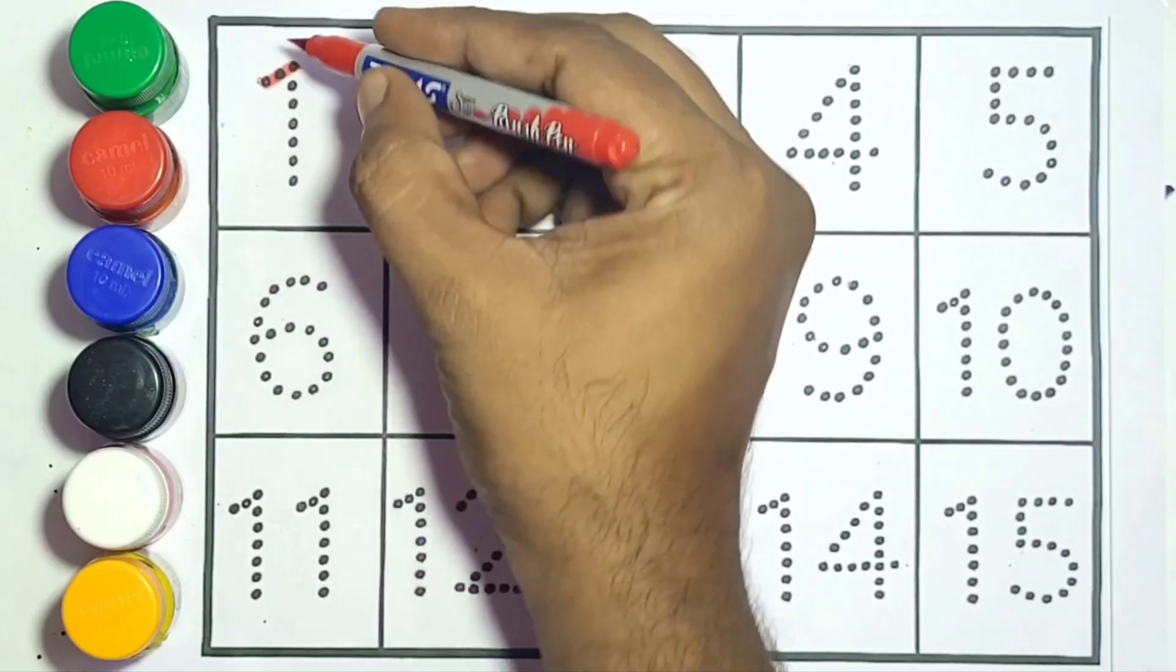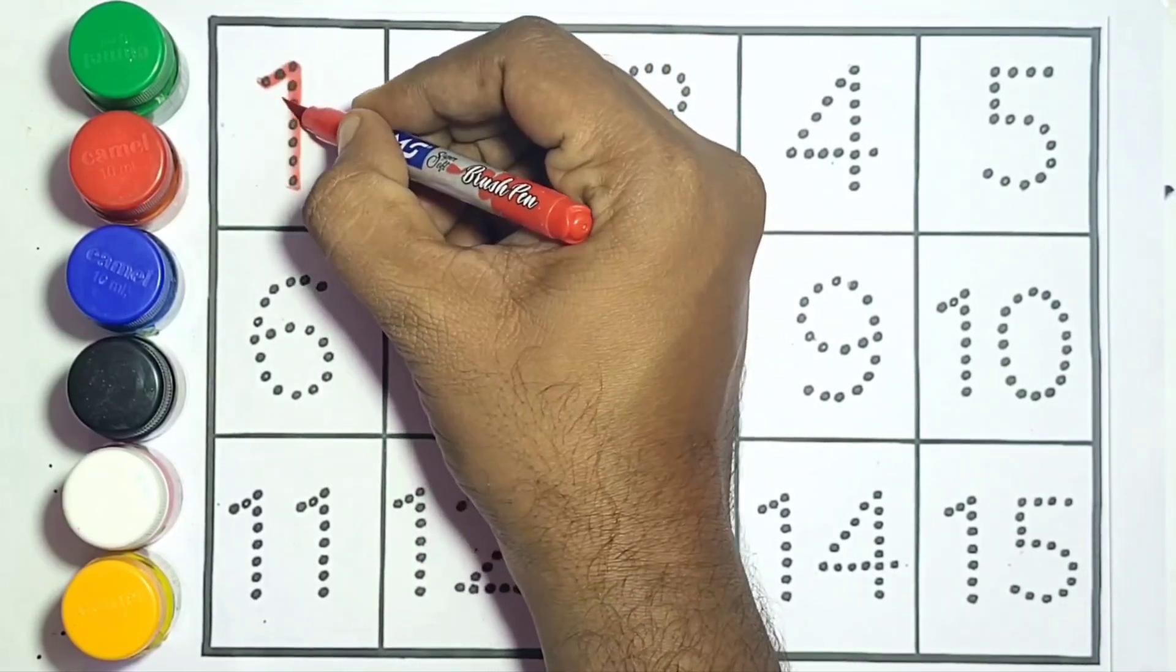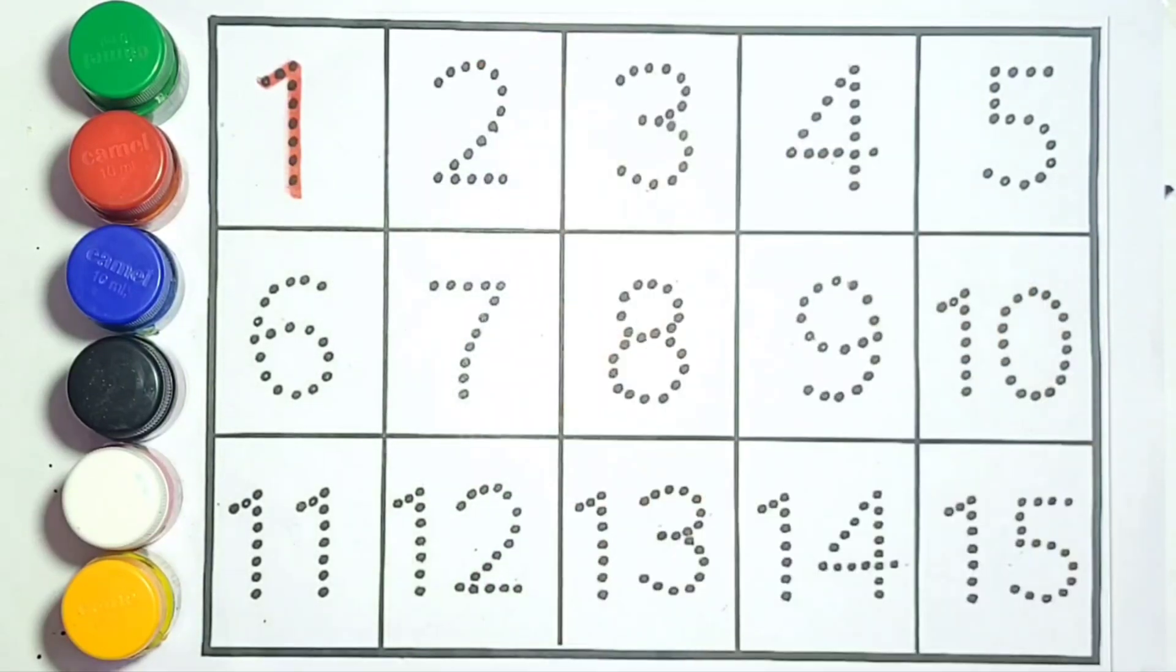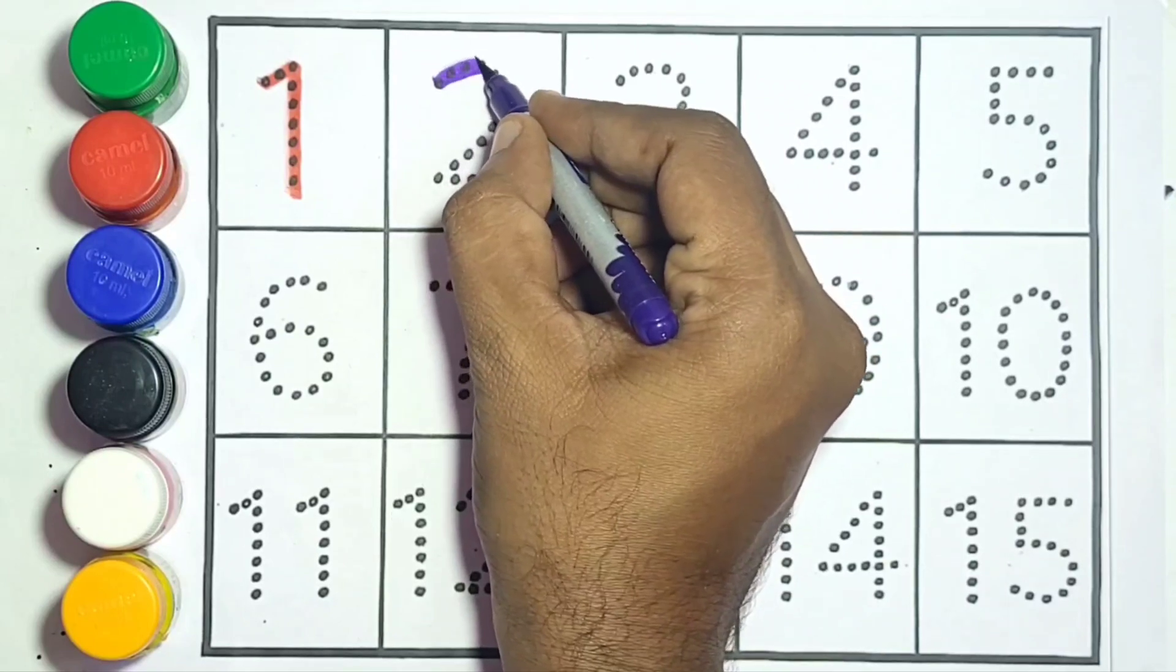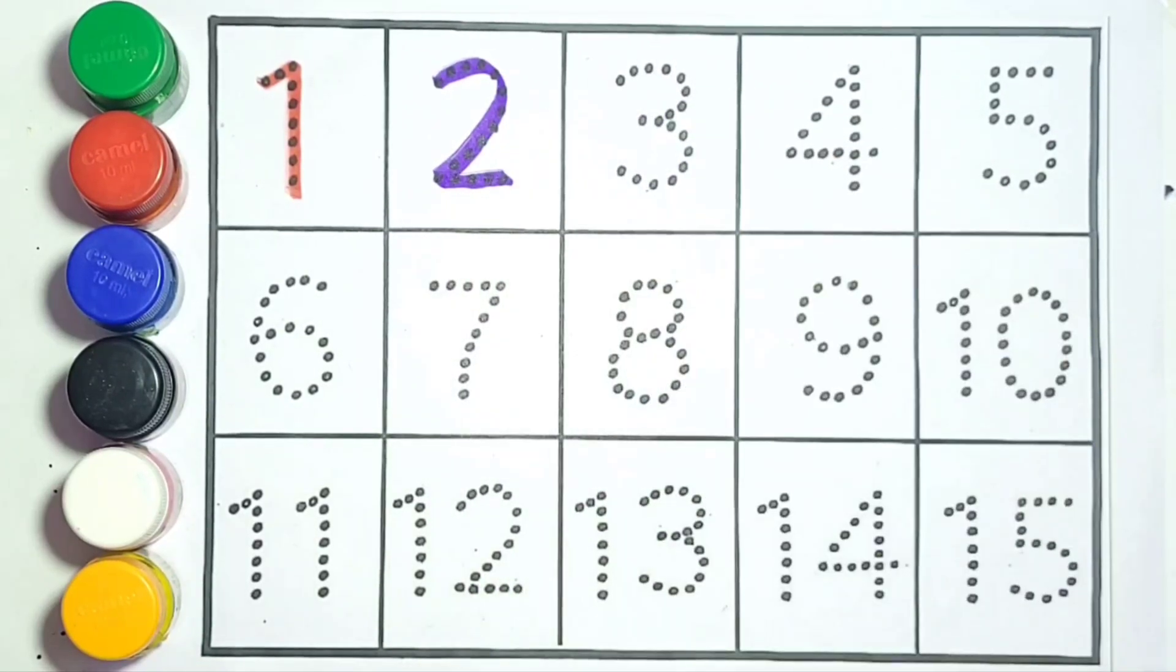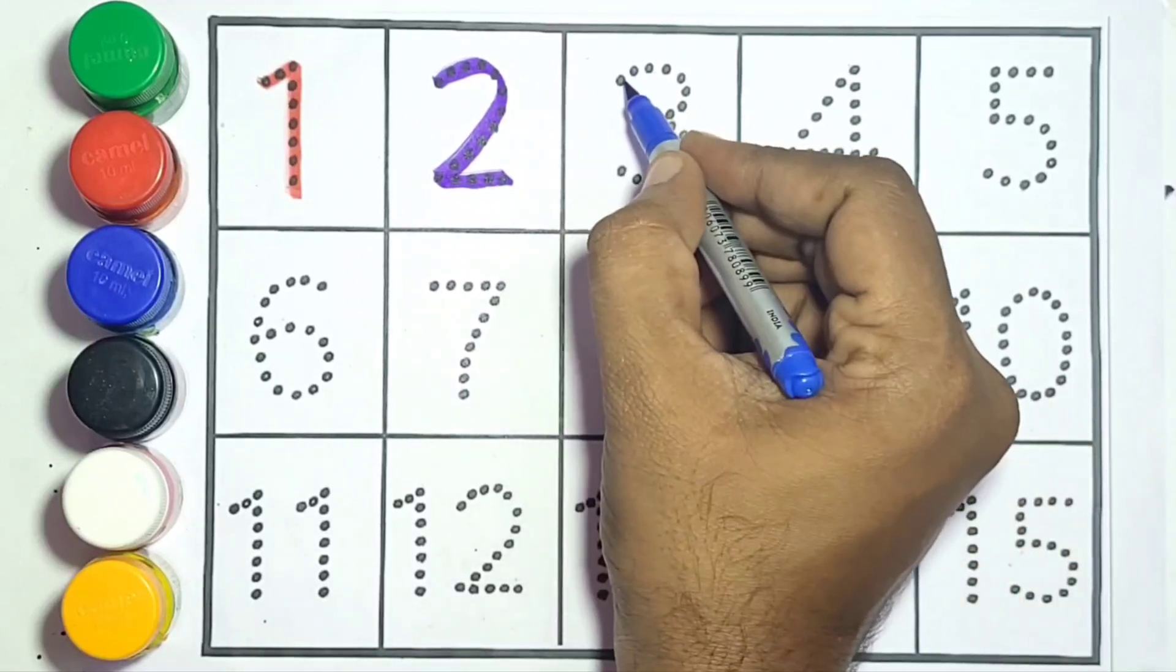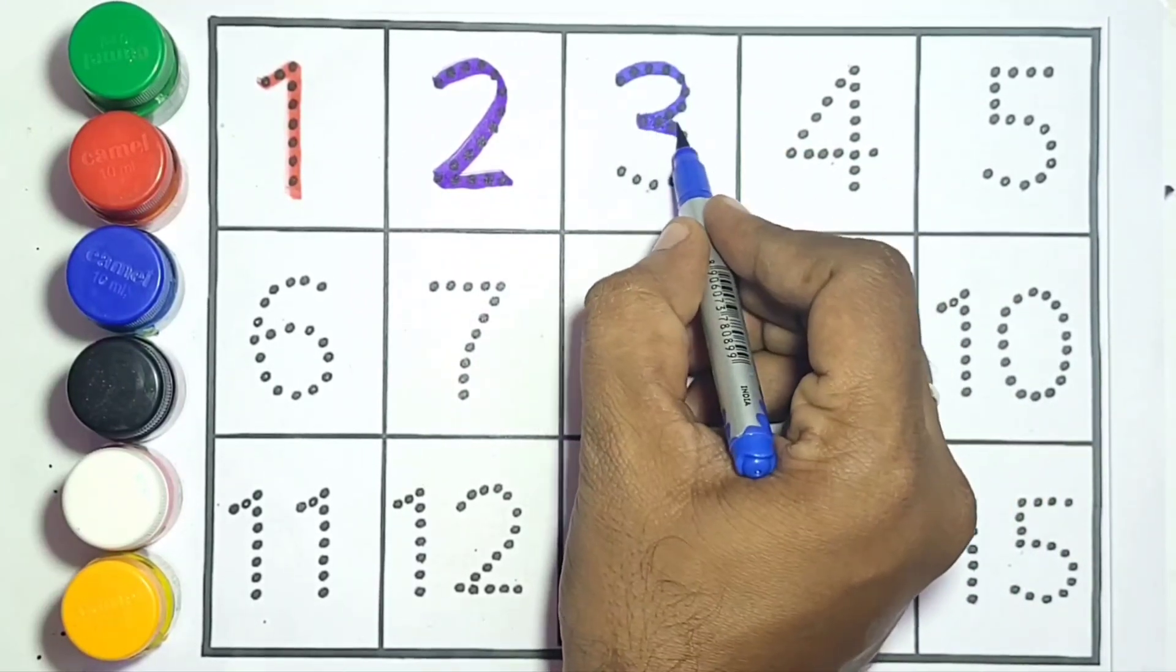First, number one. This is number one. Two, number two. Three, this is number three.